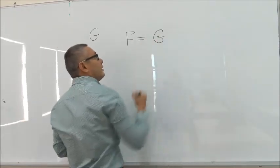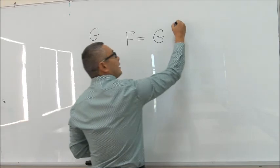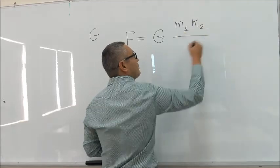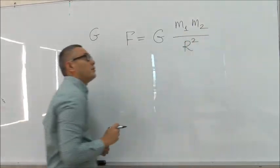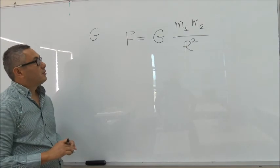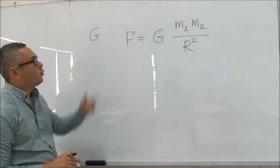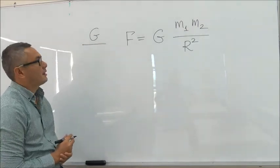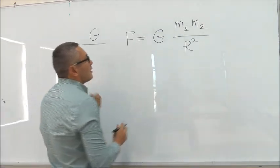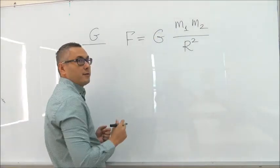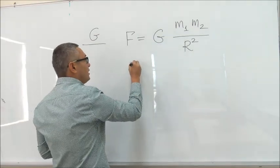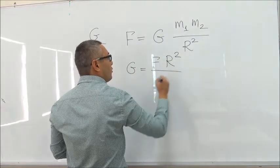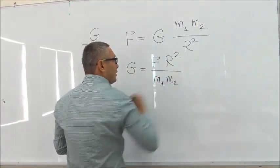is written as universal gravitation constant G times the mass of the first object times the mass of the second object over the distance squared between them. So now let's use this formula to figure out what are the SI units written in base units for the gravitational constant G. Let's rework this and write down G in terms of all the other variables in this formula. So G is equal to F R squared over m1 and m2.